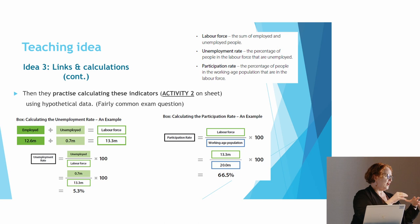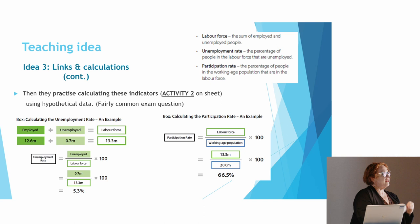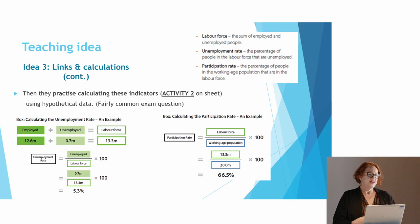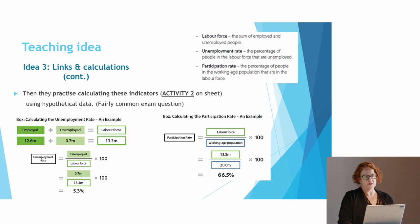You could ask students to come up with their own data and give it to classmates to practise the calculations and understand the links. For example: if economic conditions were to improve and the hidden unemployed joined the labour force, calculate the new unemployment rate and new labour force participation rate. Ask them to interrogate what the data means and how they're going to do those calculations. These are not uncommon exam questions, particularly in multiple choice.